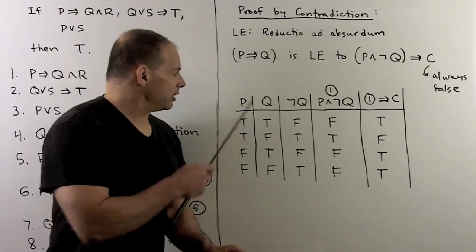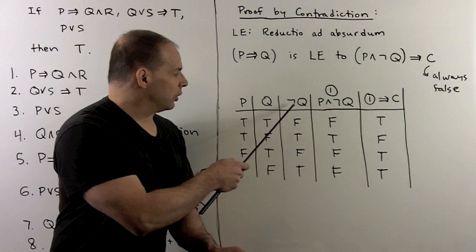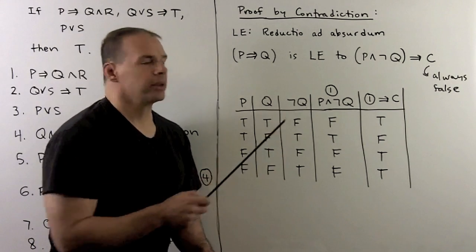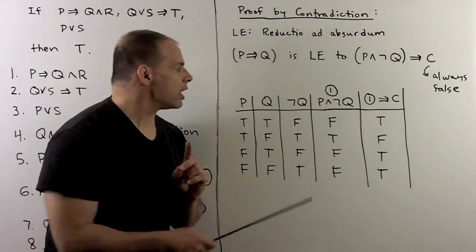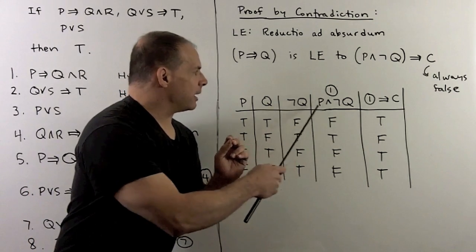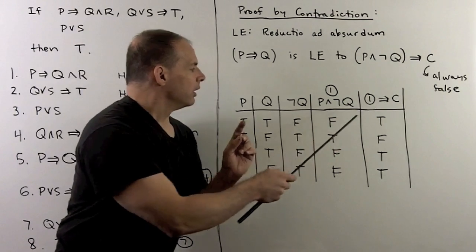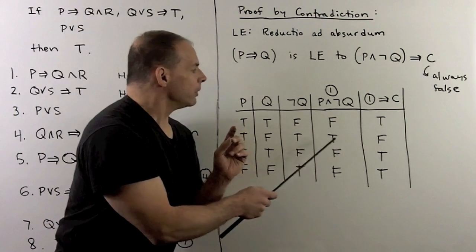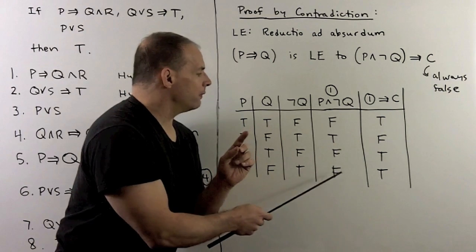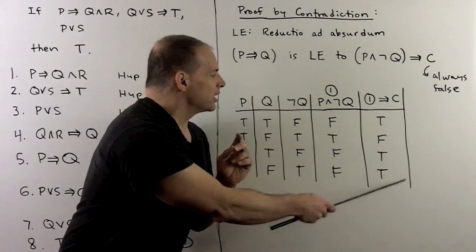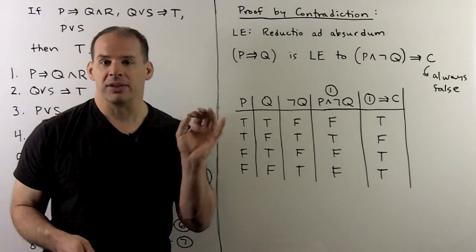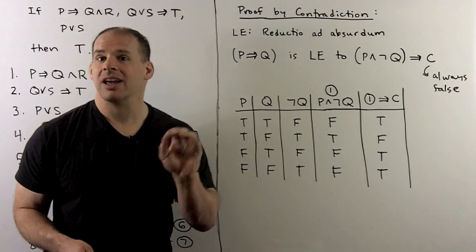We set up our truth table with p and q. We take not q: false, true, false, true. We take p and not q: false, true, false, false. Then taking that statement implying a contradiction: false to false is true; true to false is false; false to false is true; false to false is true. This gives the same result as p implies q — they have the same truth table and thus are logically equivalent.